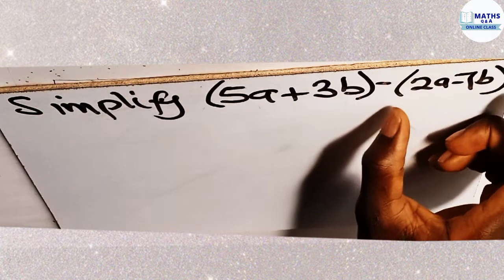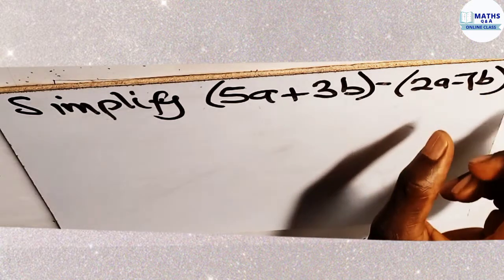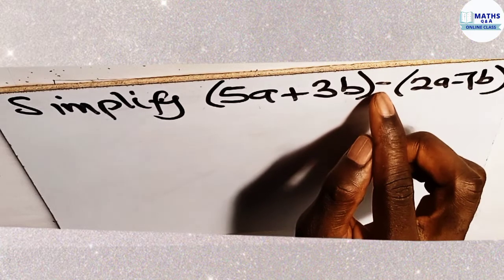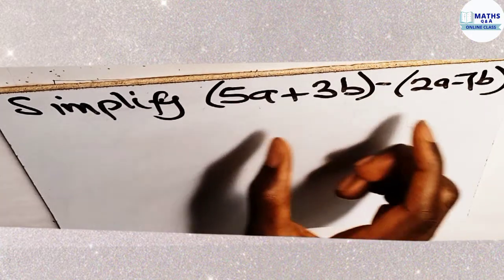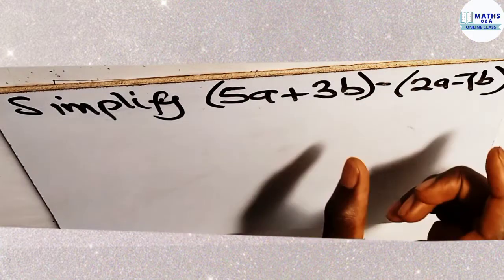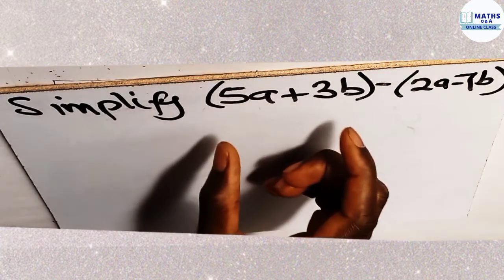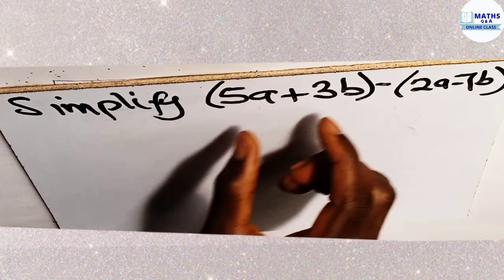But because they are in a bracket we see them as one term, and then these two is in a bracket so we see them as one term, and there is a subtraction sign here. So this subtraction sign separates these two terms, so you have two terms which have been separated by a subtraction.